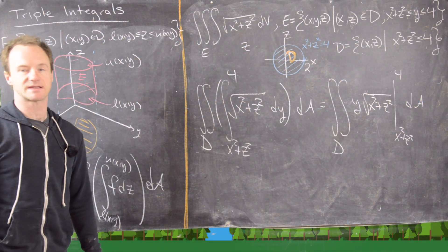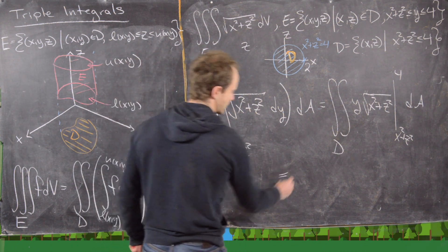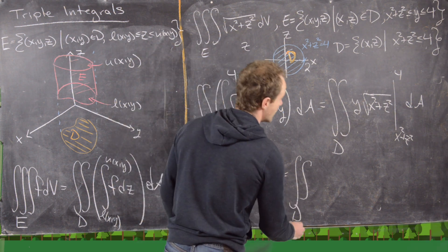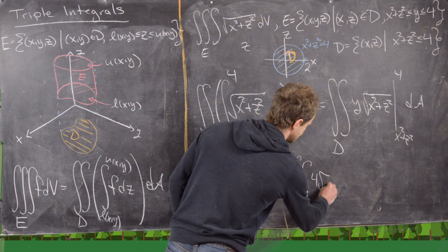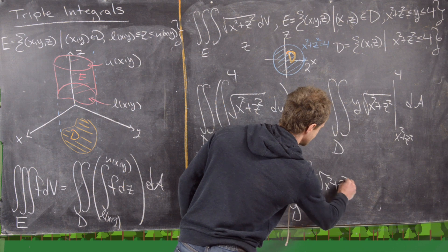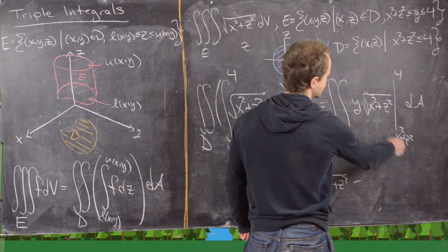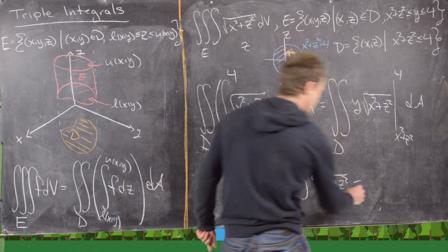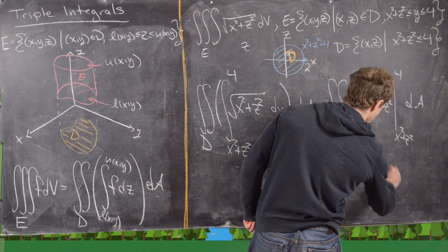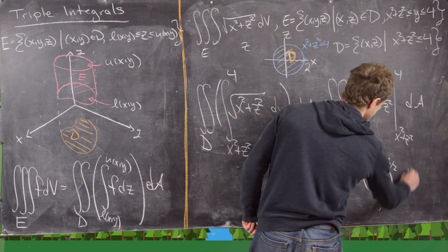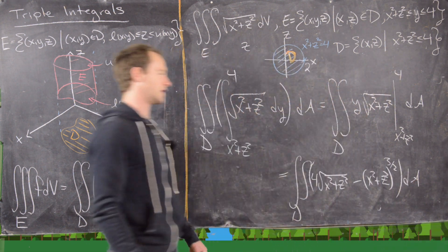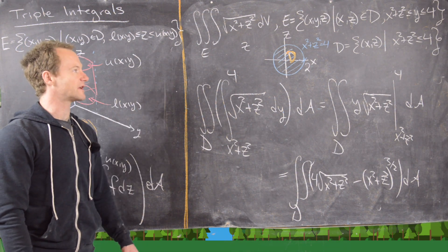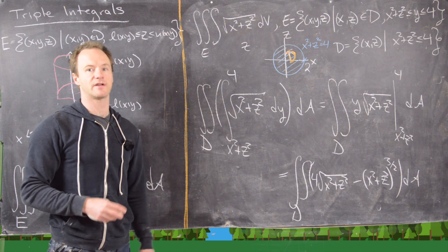Evaluating the inner integral gives us the double integral over D of 4·√(x² + z²) minus (x² + z²)·√(x² + z²), which simplifies to 4·√(x² + z²) minus (x² + z²)^(3/2), all times dA.